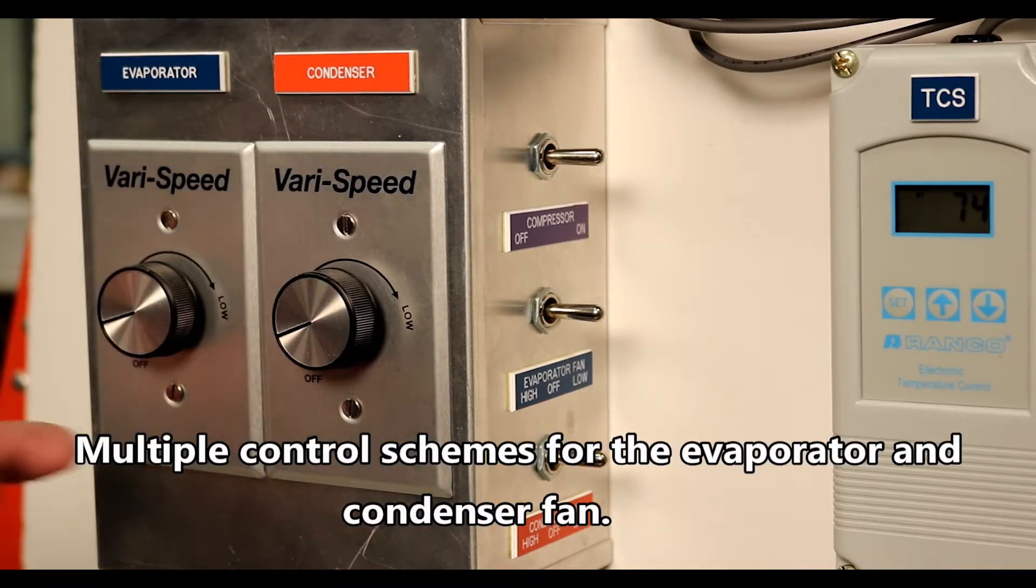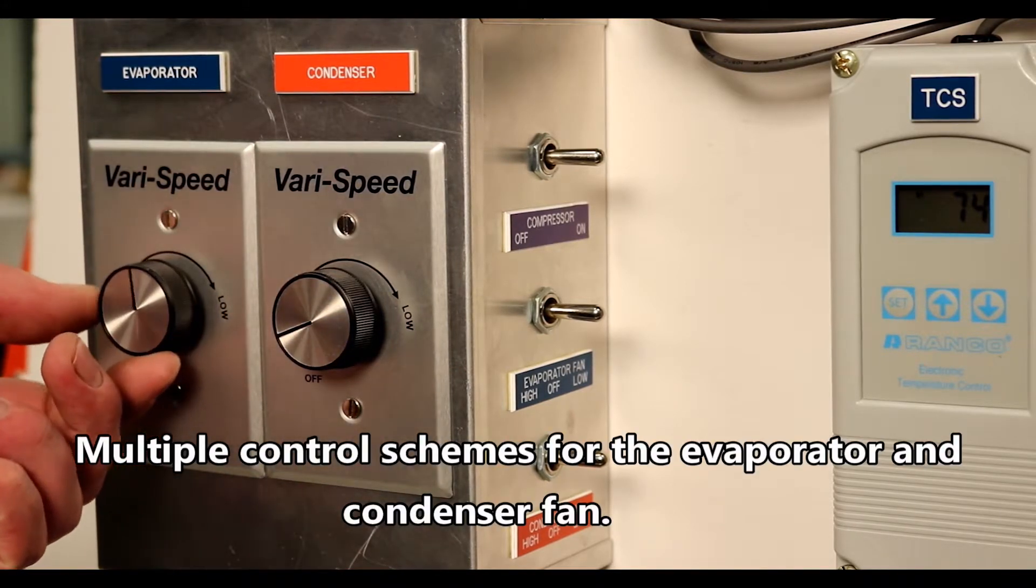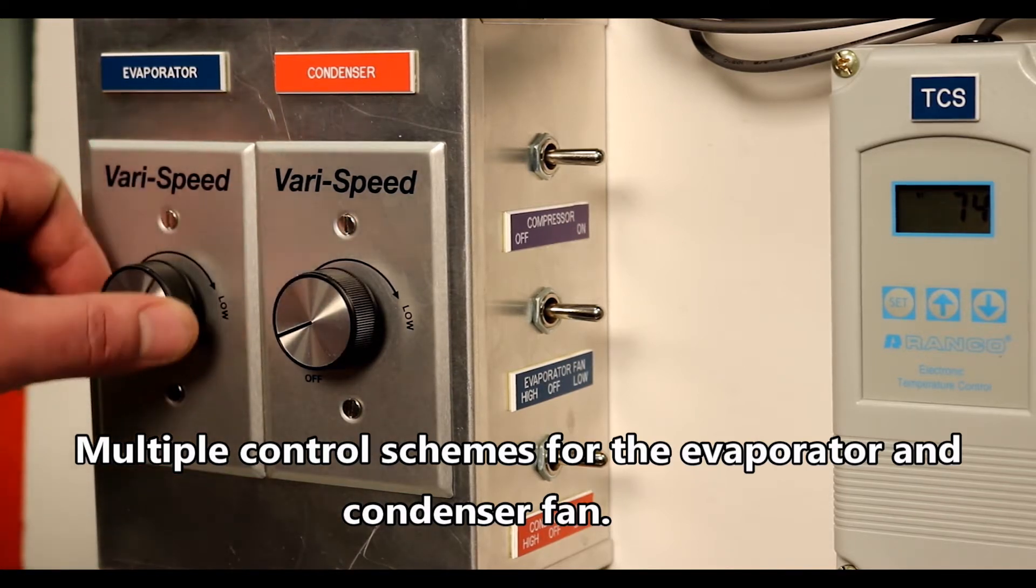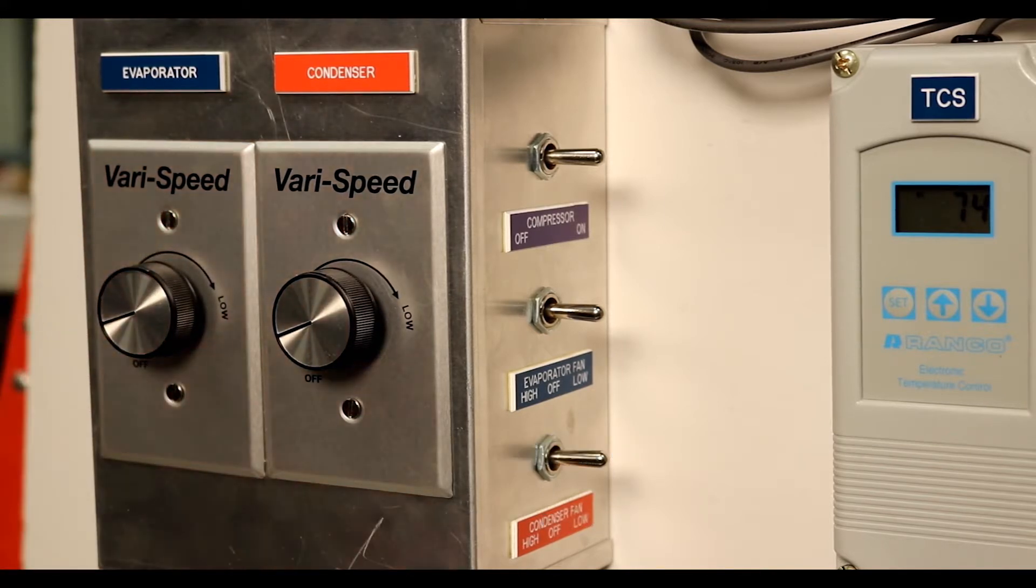Both the evaporator and condenser fans can be turned on and off by a toggle switch. They are also equipped with a variable fan speed control that can be used to adjust the load on the evaporator and condenser or to simulate dirty coils.